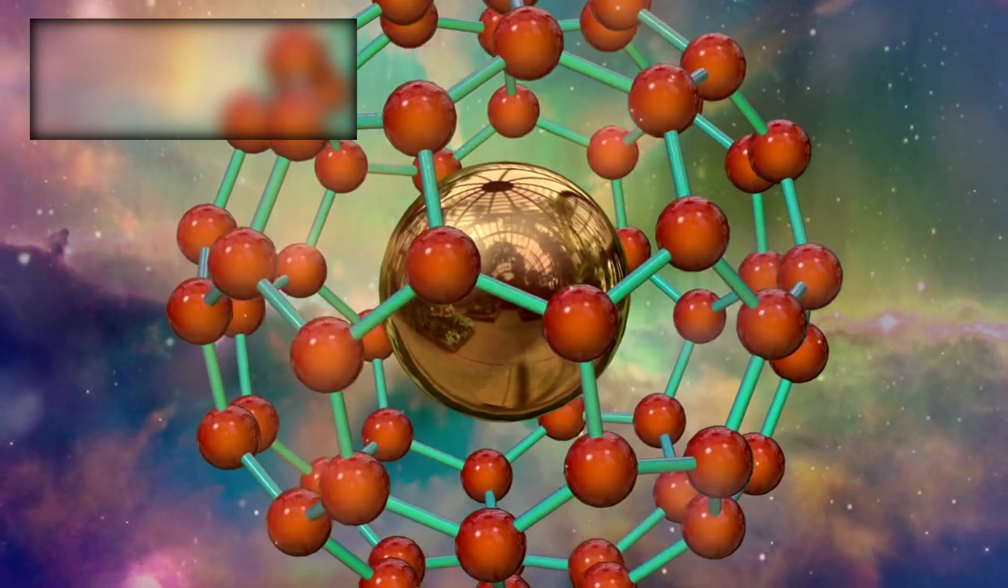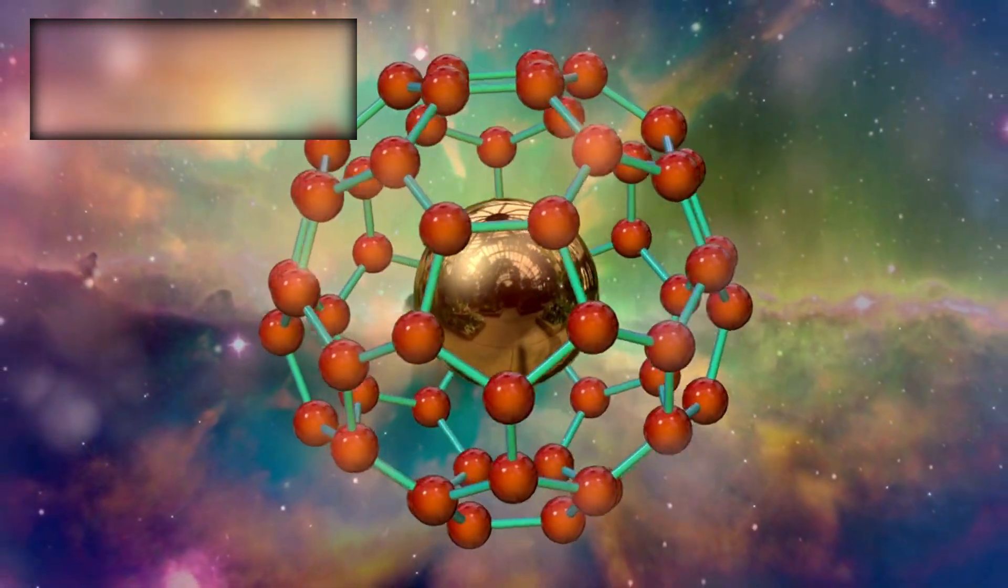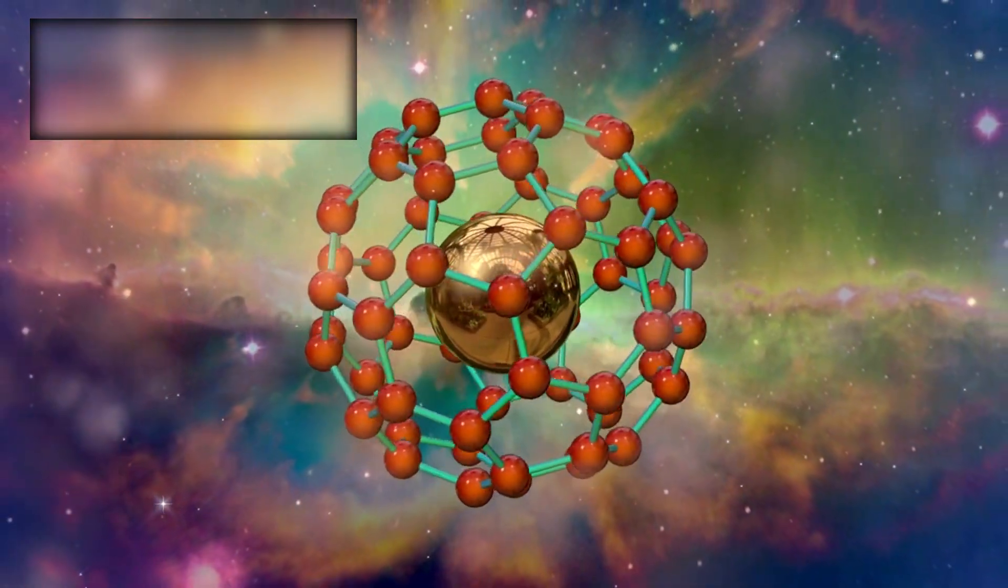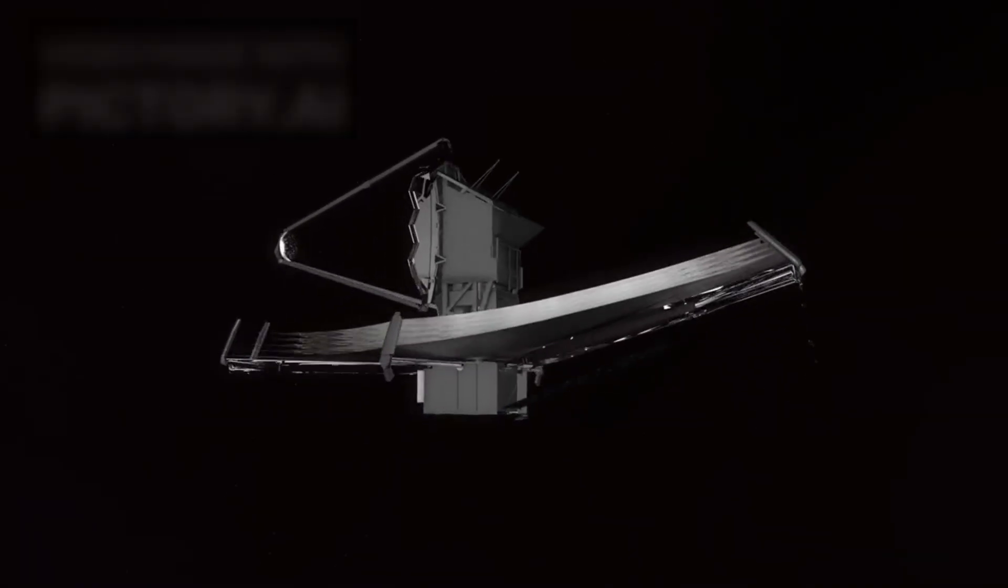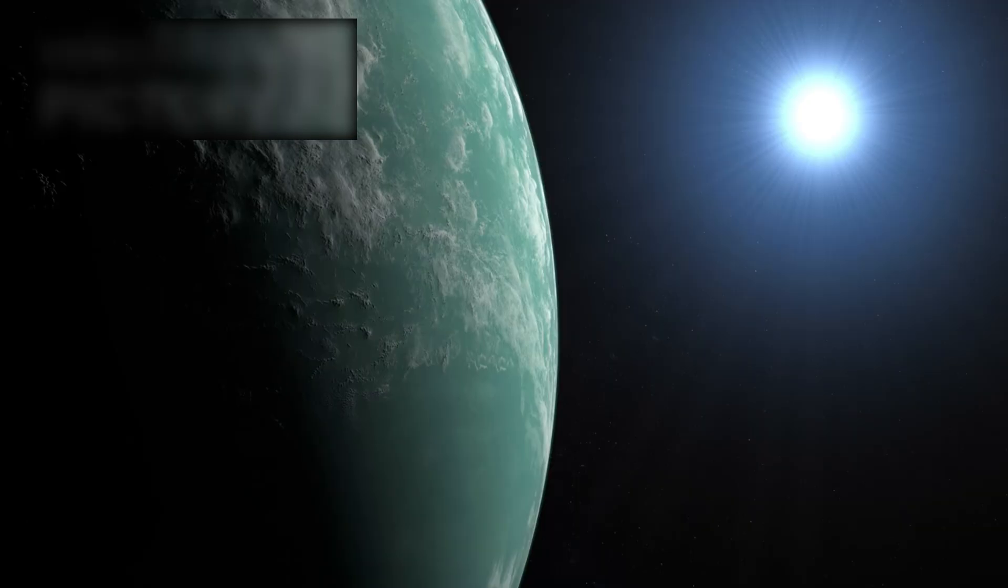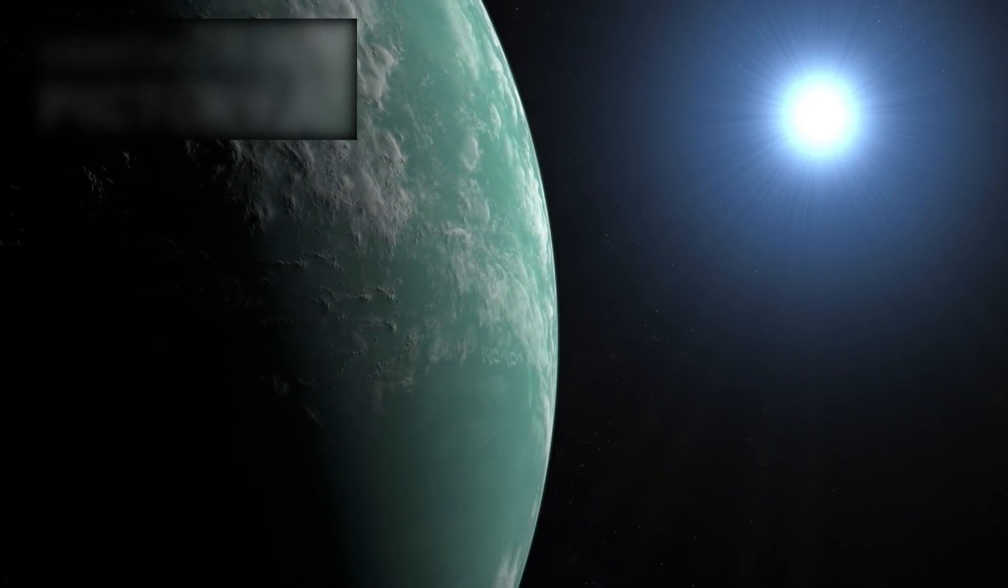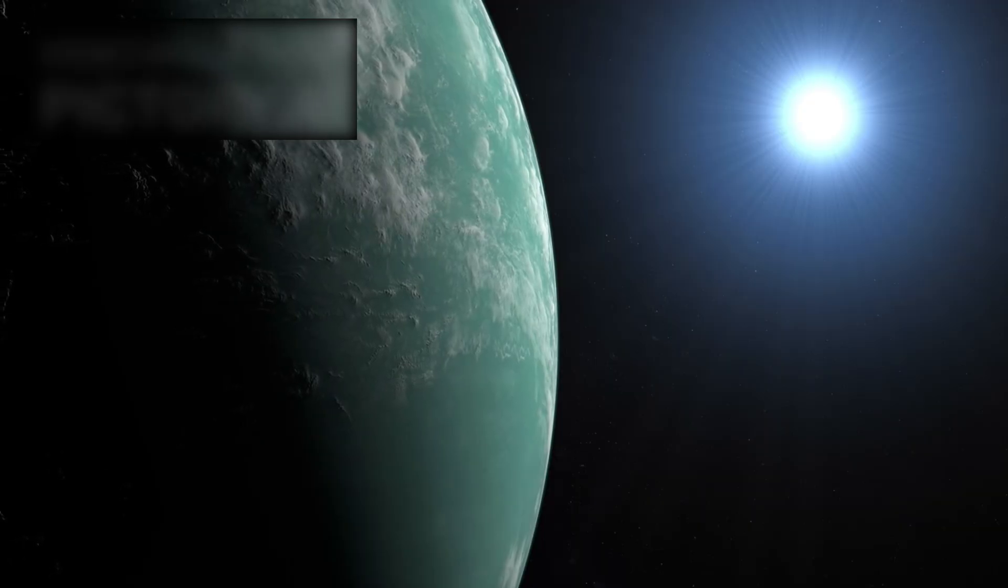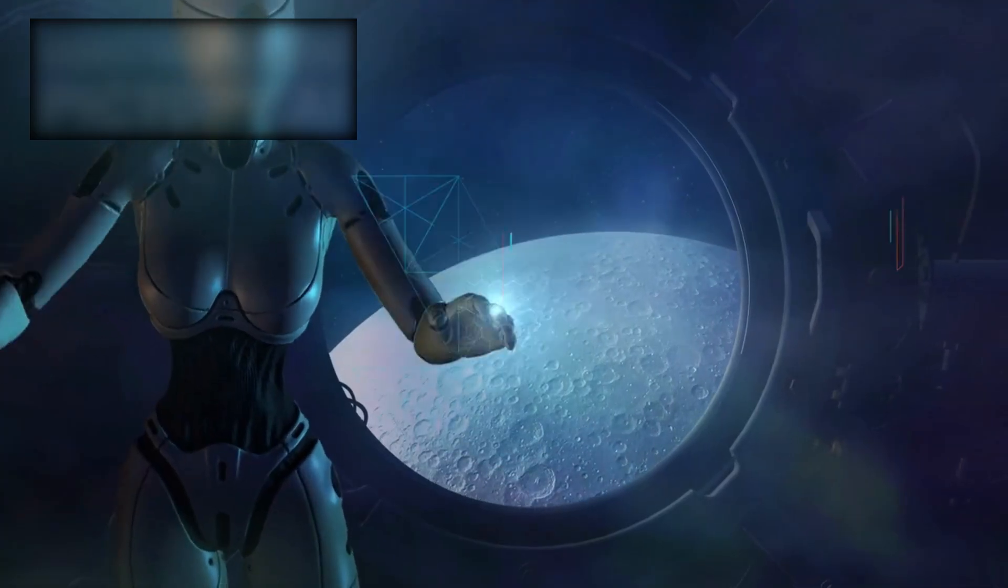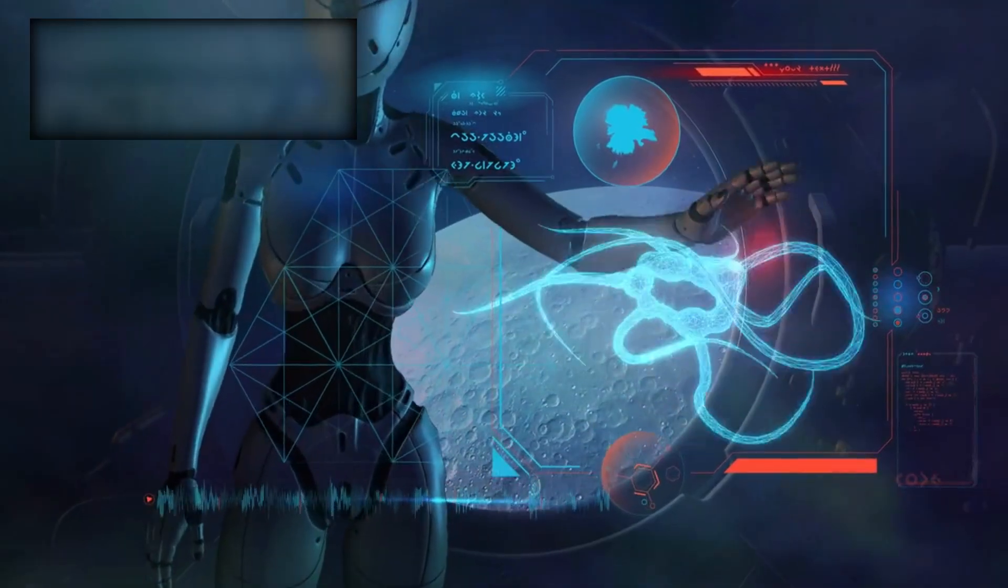The search for life now hinges on detecting biosignatures, chemical fingerprints in planetary atmospheres that could betray the presence of biology. Webb, with its unmatched infrared eyes, is leading this charge. It can detect faint traces of oxygen, methane, and carbon dioxide – gases that on Earth are intimately tied to living systems. If such a signature is ever confirmed on a distant world, it would be one of the greatest revelations in human history.